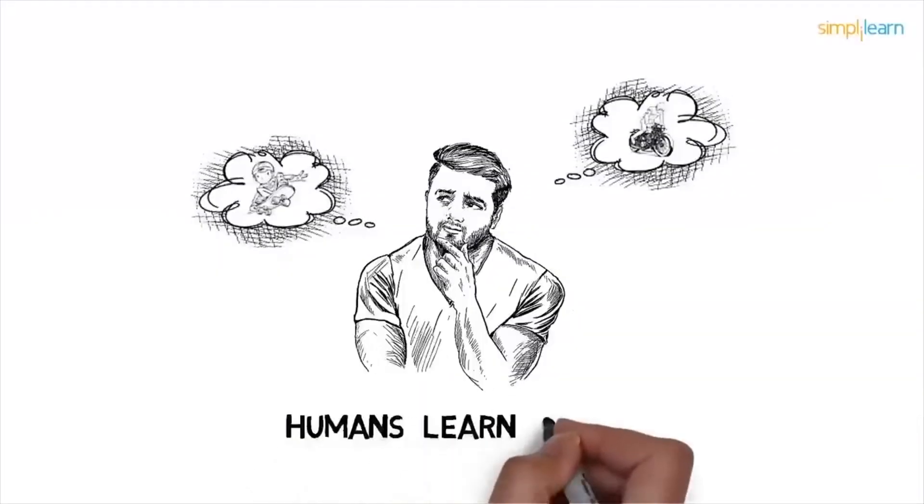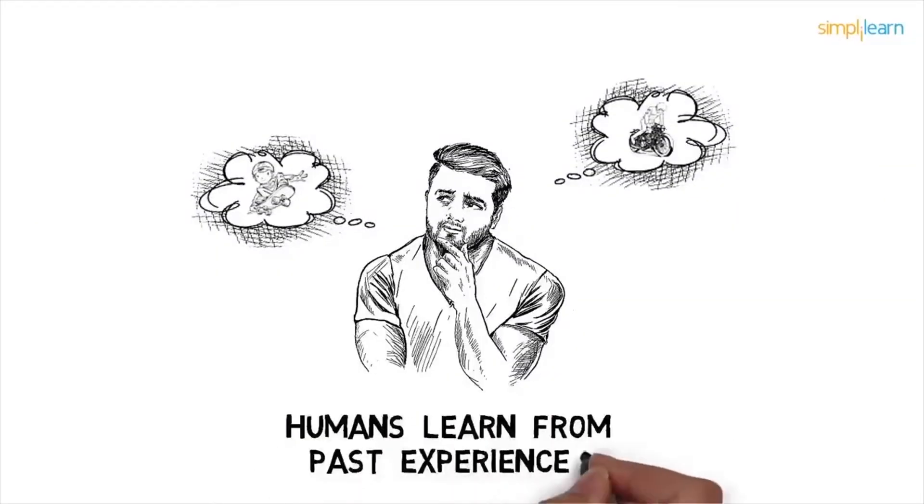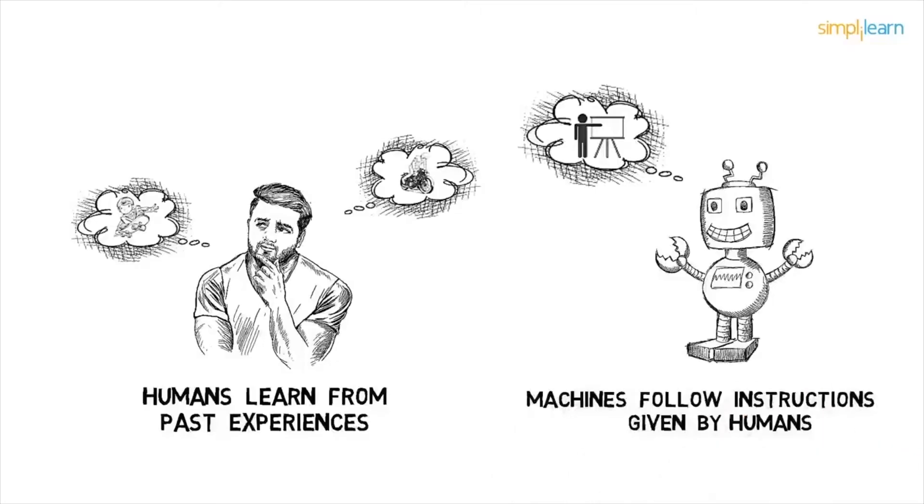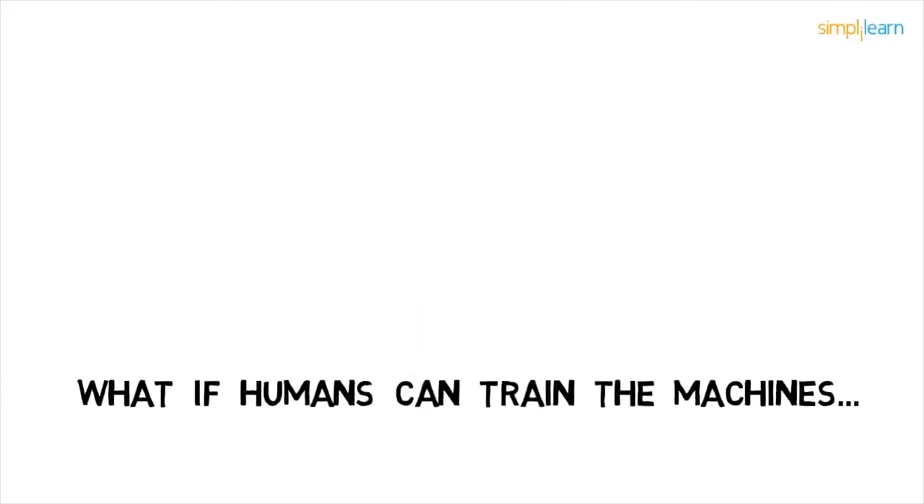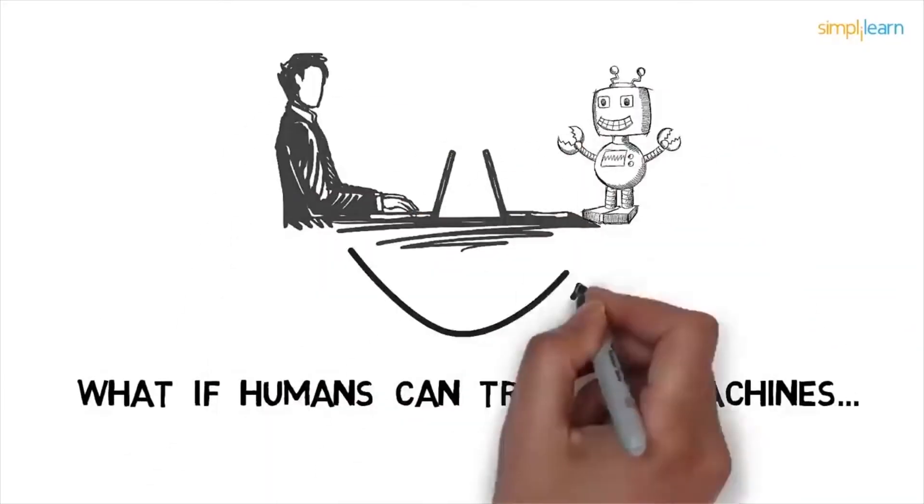We know humans learn from their past experiences and machines follow instructions given by humans. But what if humans can train the machines to learn from the past data and do what humans can do and much faster? That's called machine learning, but it's a lot more than just learning. It's also about understanding and reasoning. So today we will learn about the basics of machine learning.